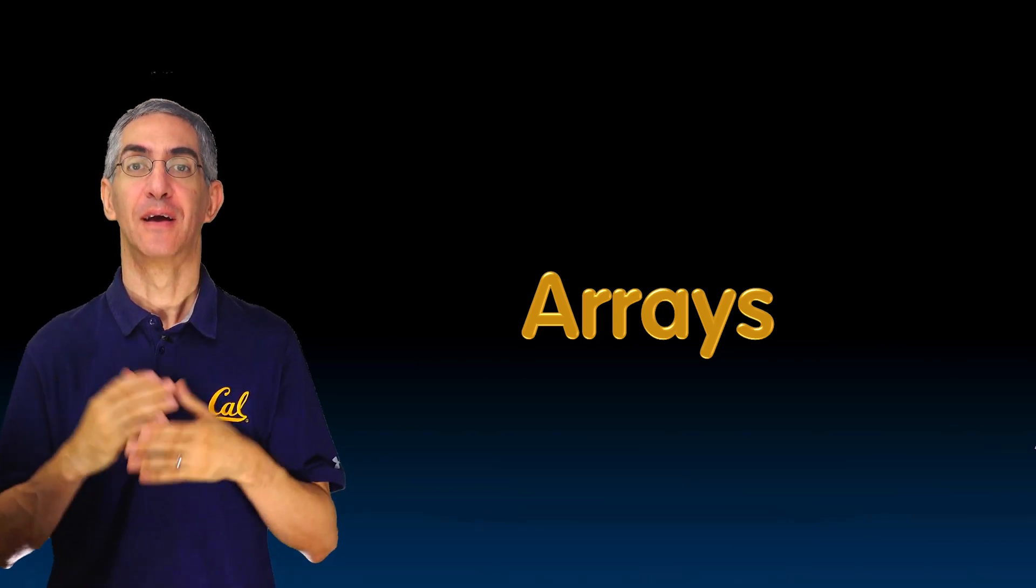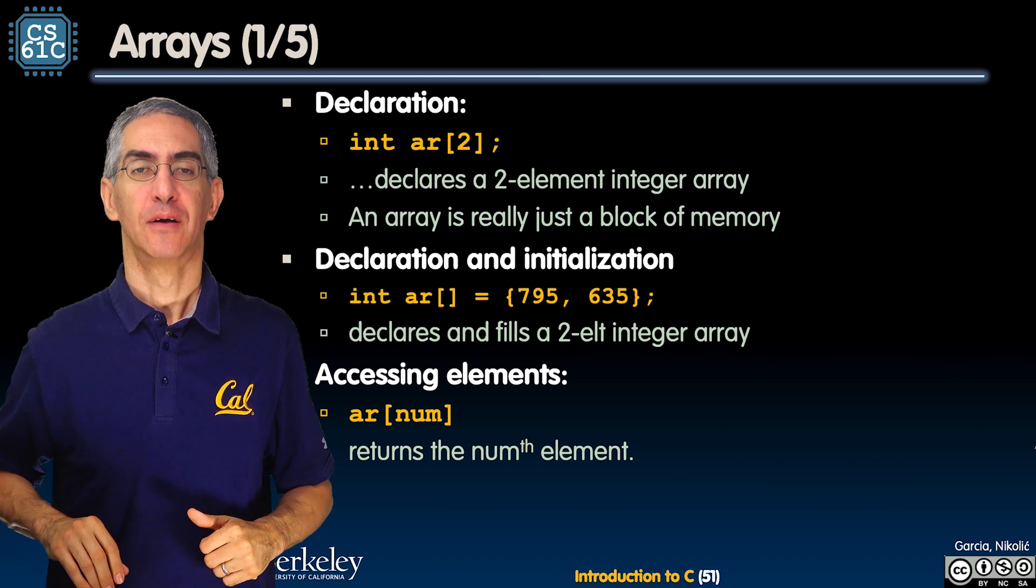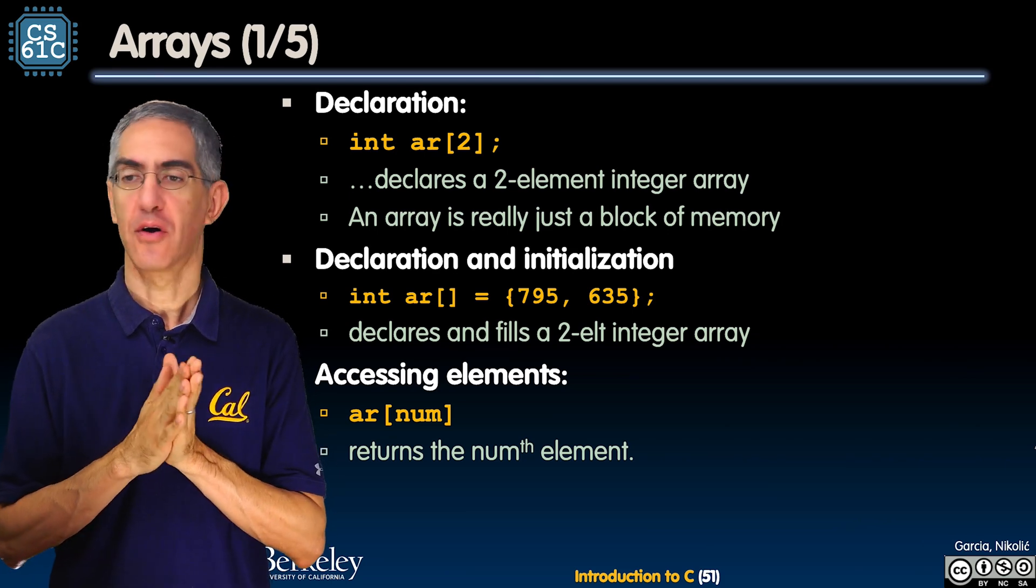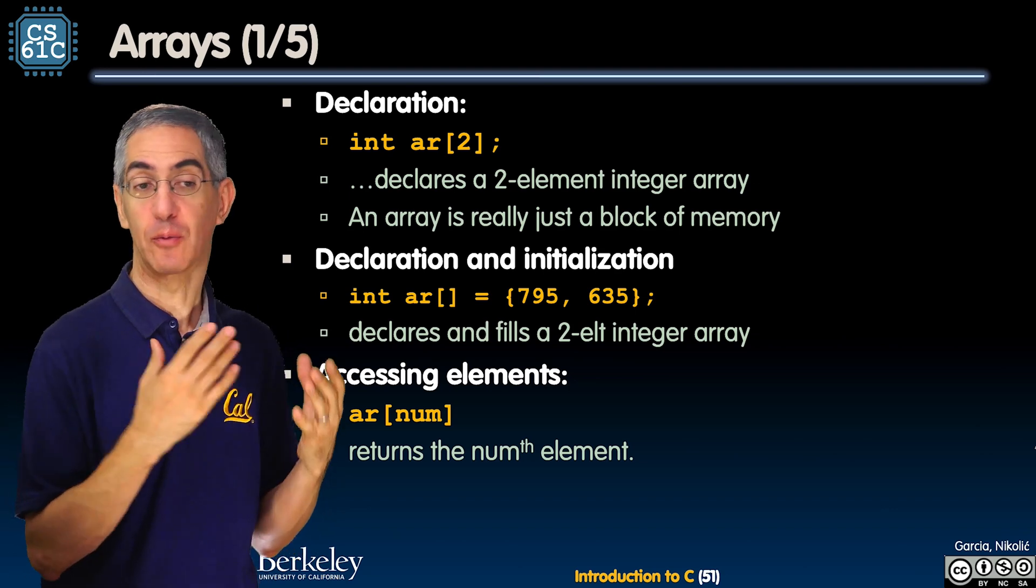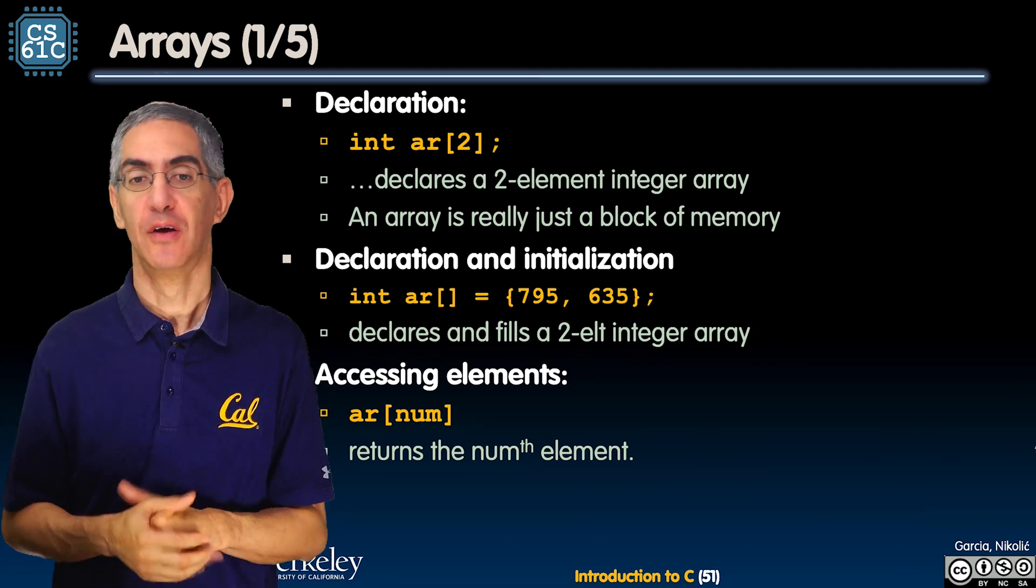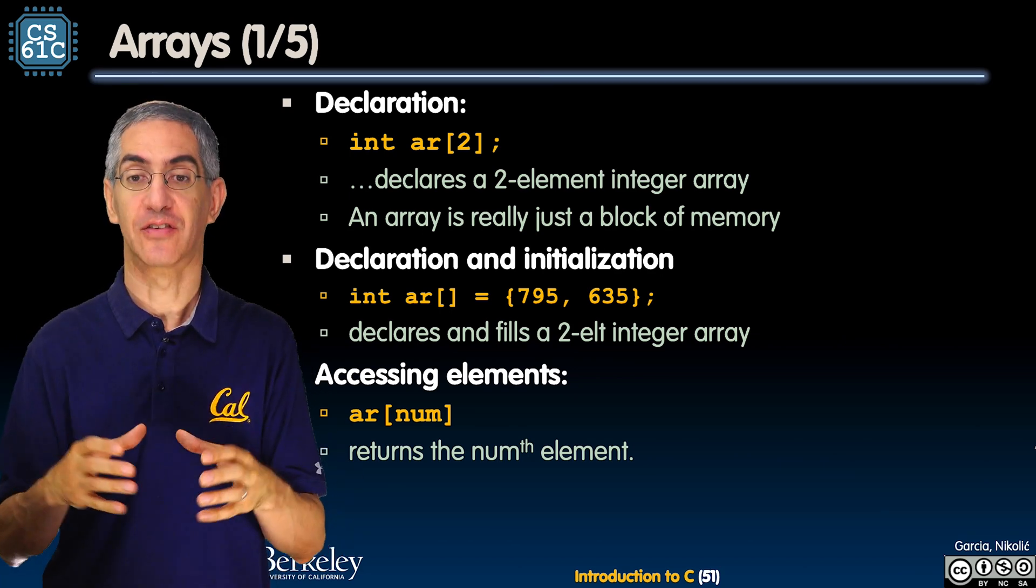And welcome back. Let's now talk about C arrays. Arrays are similar to what you've probably seen in Java. You declare them by saying what type it is and how many you want.